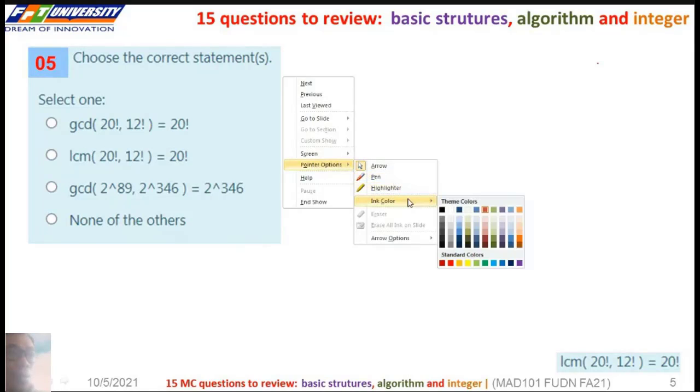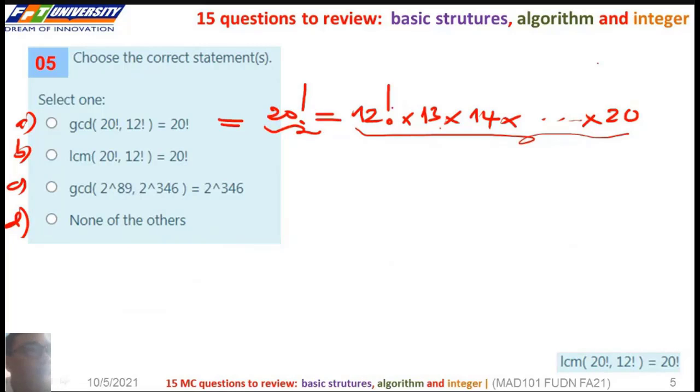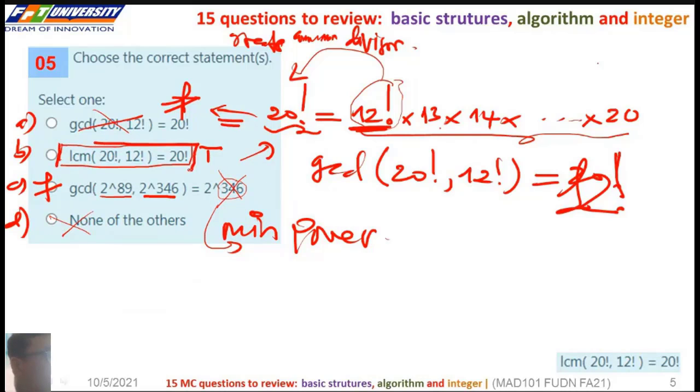So here, choose the correct answer. Greatest common divisor. Here we can express 2 factorial multiply by 20. Because this is a divisor. So the GCD is... This is 4. This is true. Based on here, when finding the greatest common divisor we choose the min power, but the power here is not min power. So this is 4, the answer is B.